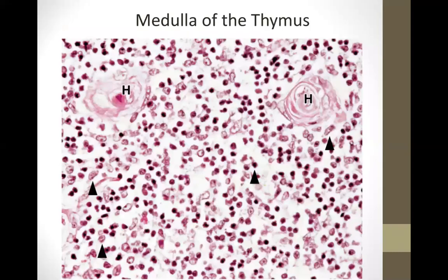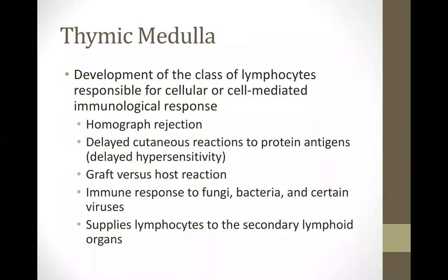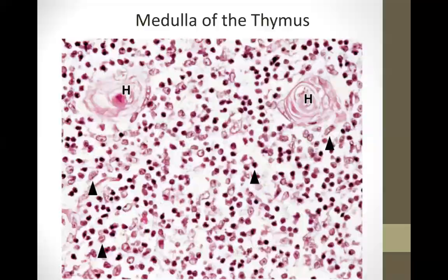Other cell-mediated immune responses include immune response to microorganisms such as fungi, bacteria, and certain viruses — all brought about by the thymic medulla. In the image, H stands for Hassall's bodies or corpuscles, and scattered thymocytes are also visible. In the practical exam: identify the structure pointed — it is Hassall's corpuscles or thymic corpuscles, located at the thymic medulla, responsible for cell-mediated immune response.